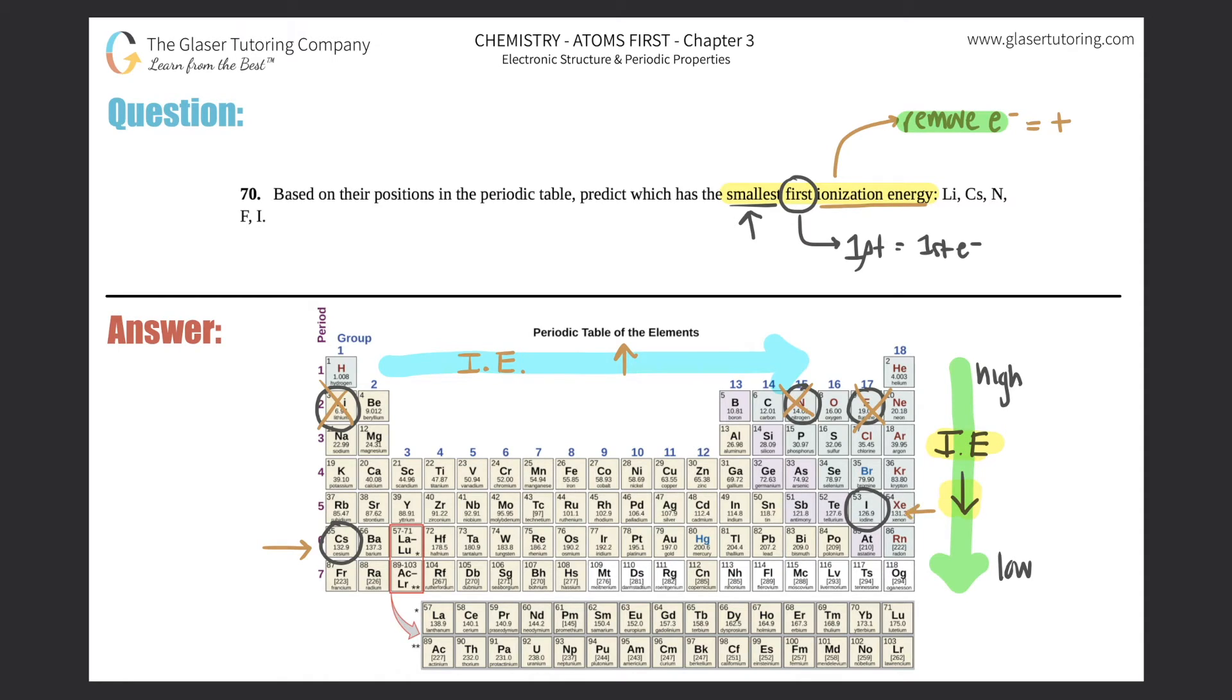Now we have to figure out which one is smaller: cesium versus iodine. That's when you use the trend across the period. From left to right, ionization energy increases, which means you have high energies here and low energies here. We want to find the smallest, so it would make sense that cesium has the smallest first ionization energy.